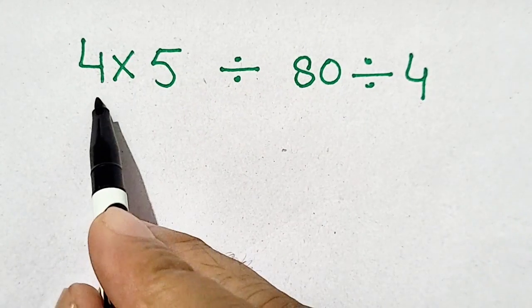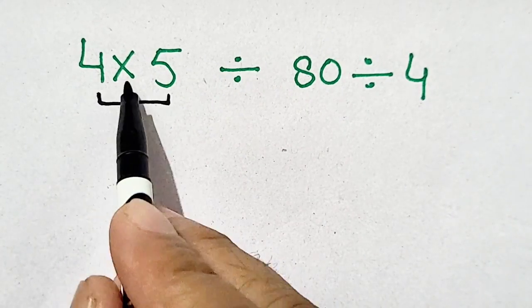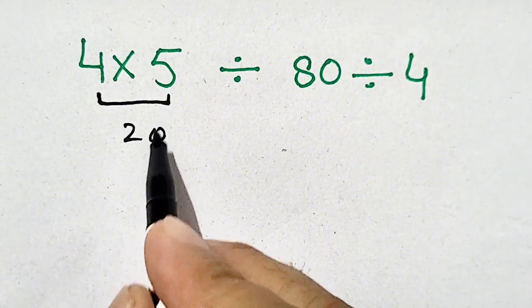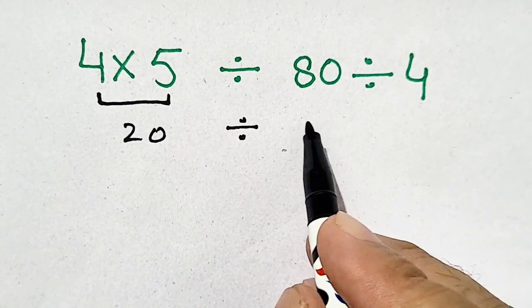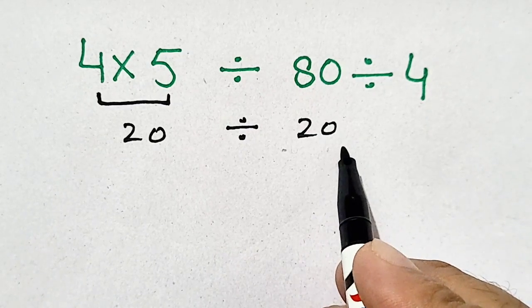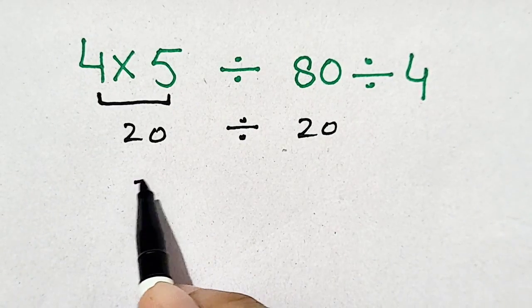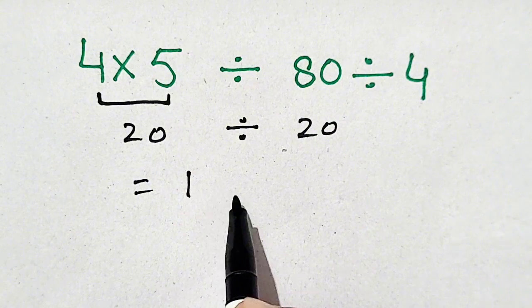Mostly people do 4 times 5 equals 20, divided by 80 divided by 4 is 20. So 20 divided by 20 equals 1.